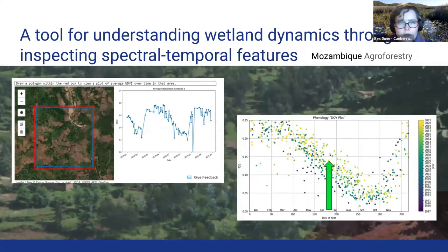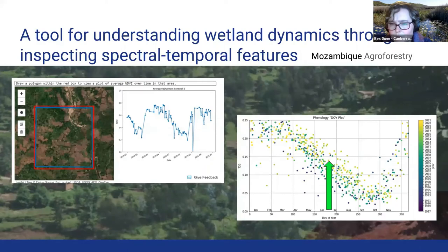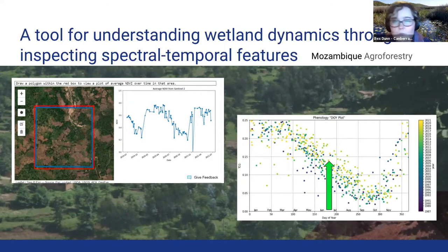We also took it for a spin over an area of agroforestry in Mozambique that Alison Bailey is more familiar with — an area where they're looking at combining agriculture with trees. When you look at the phenology day-of-year plot, everything's kind of getting greener and in more recent years the yellow is at the top of the plot. So you can run the tool over this and see that it's changed heaps and it's doing awesome things, which is kind of cool.